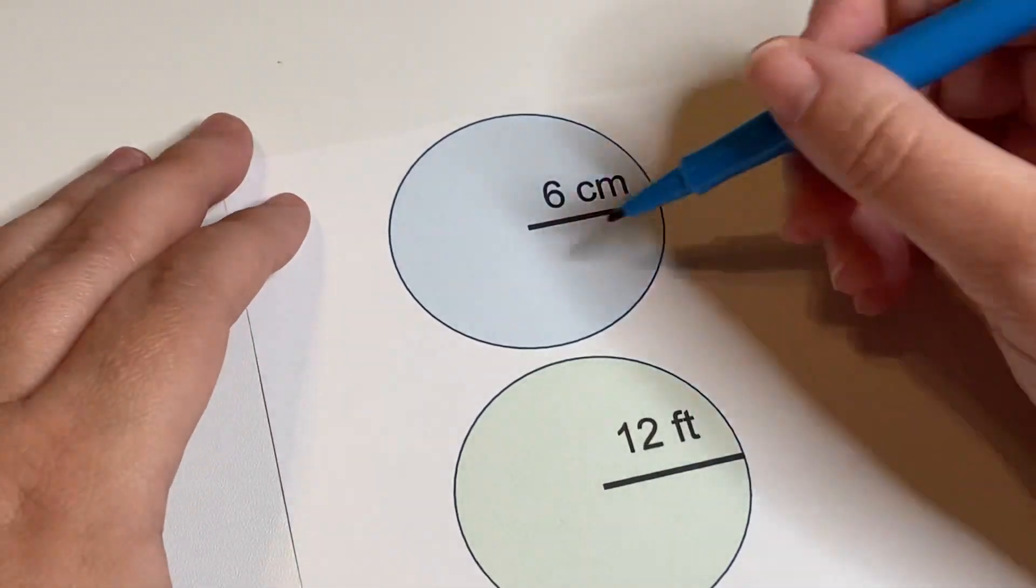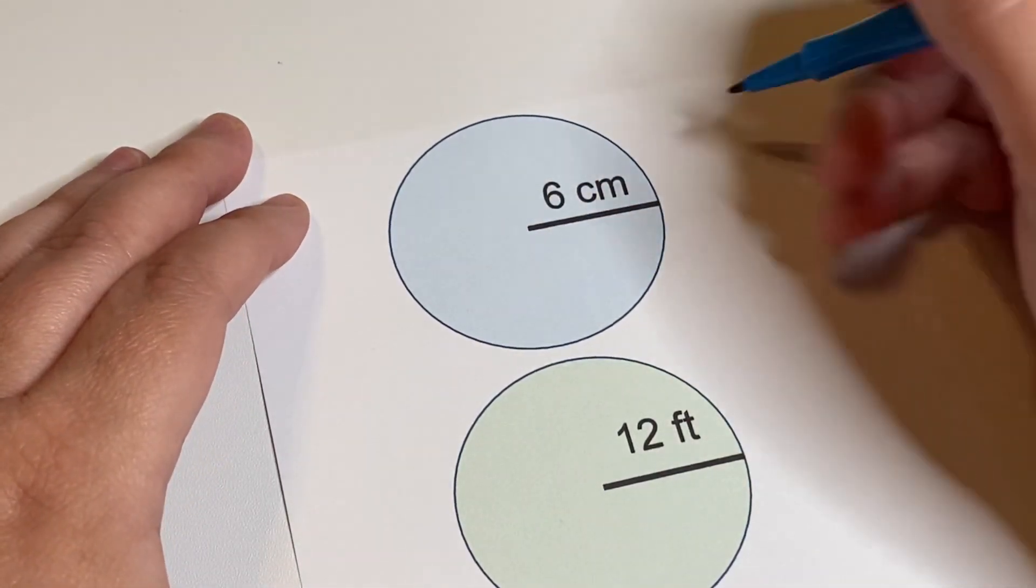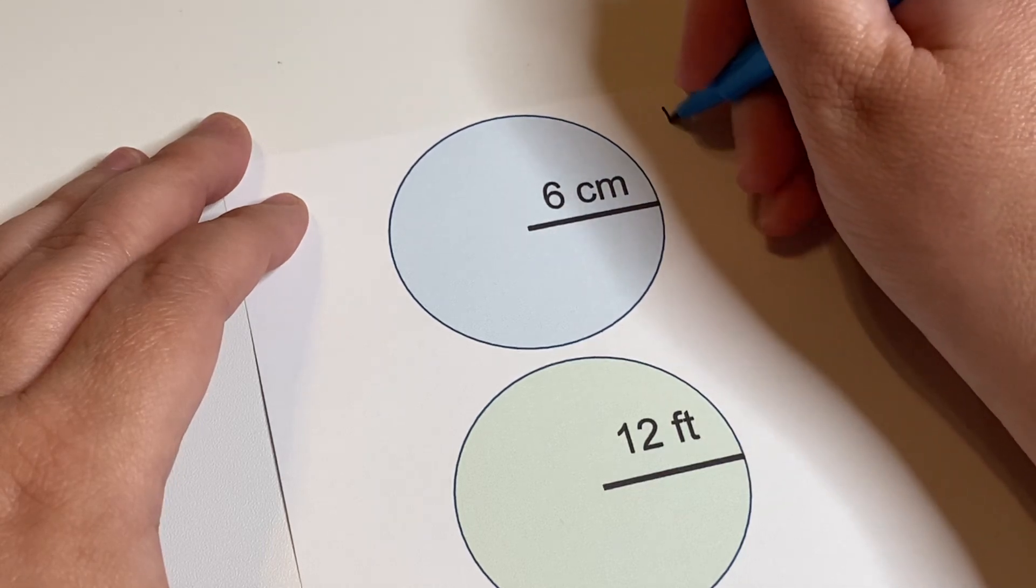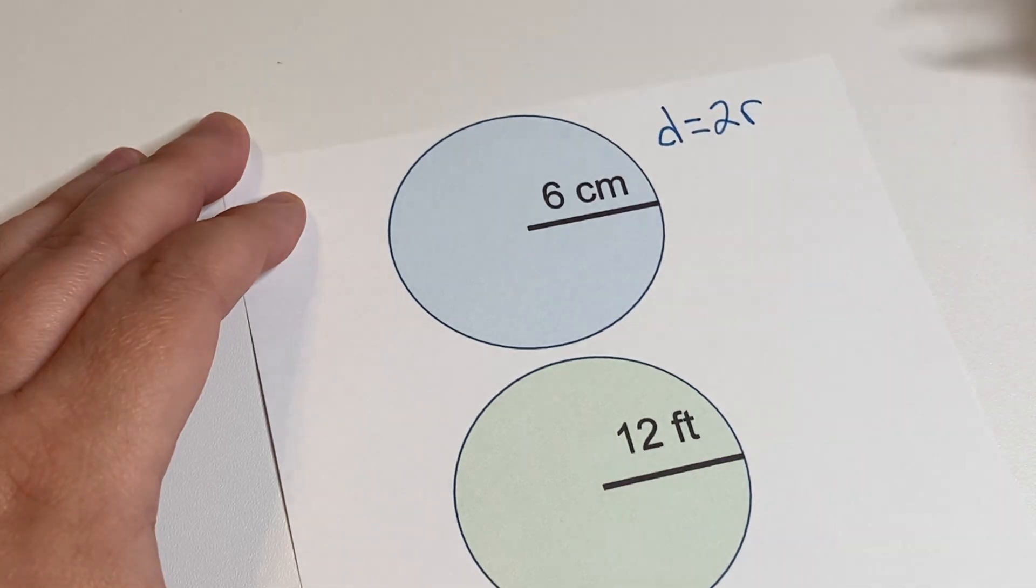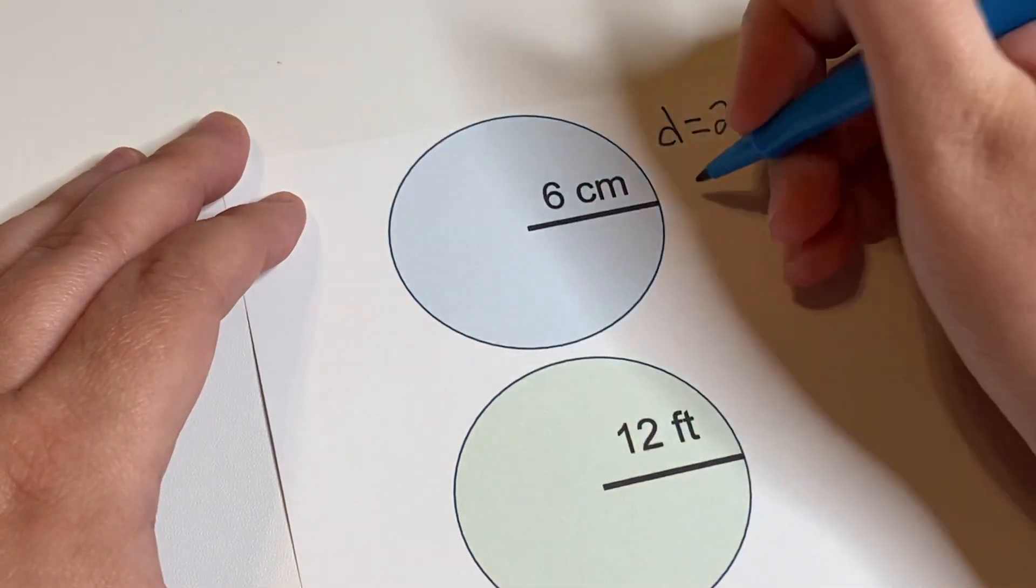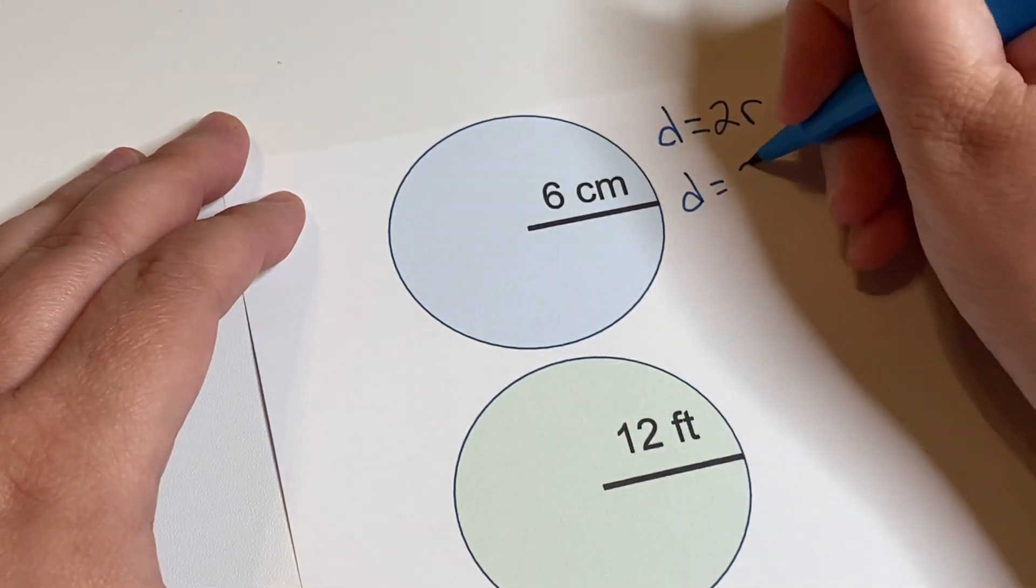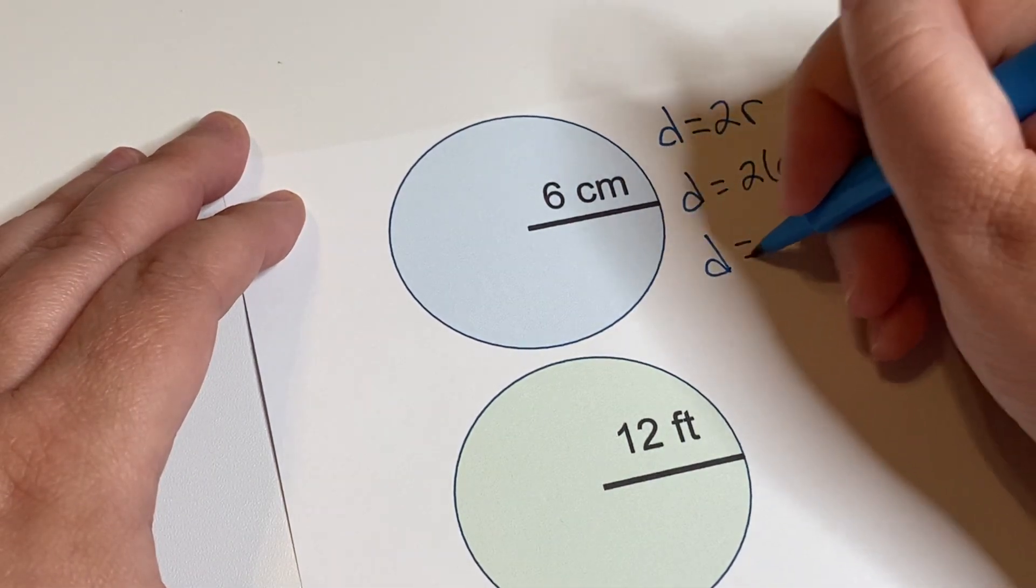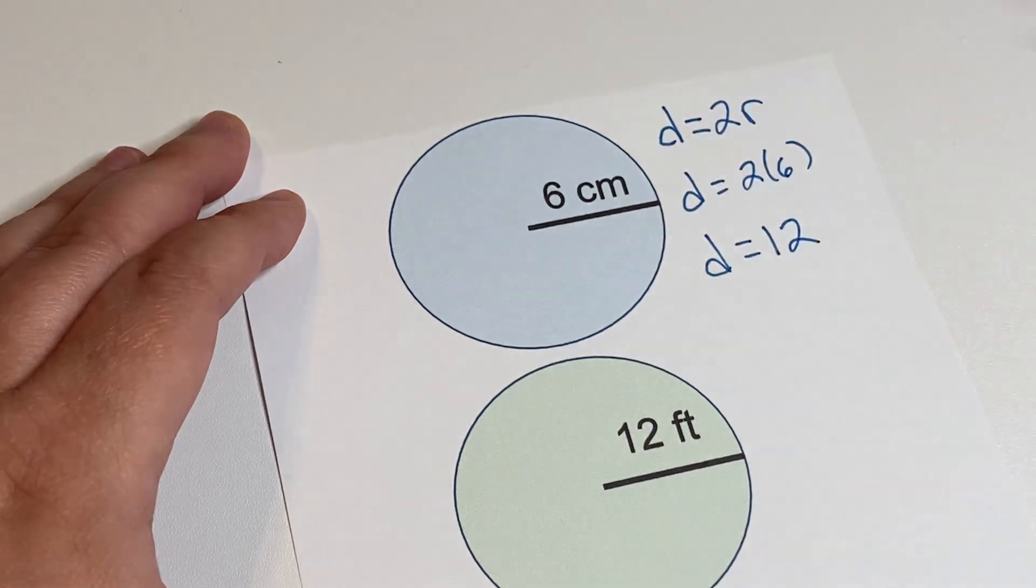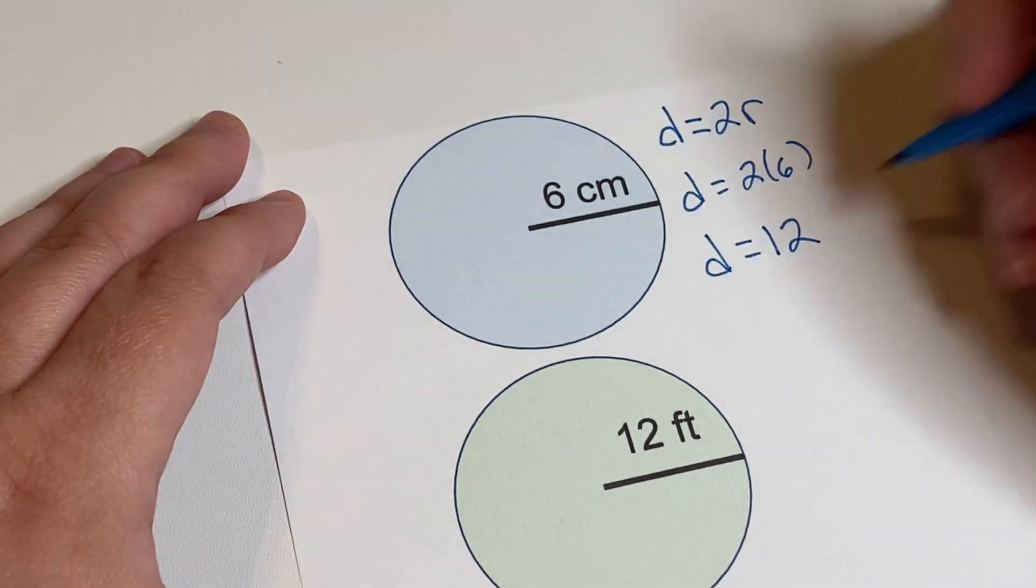So here are two more examples. We have a radius of six. So we remember that if we're trying to find the diameter it's two times the radius because we're gonna be going all the way across. So the diameter is equal to two times six. So the diameter here would equal twelve and it's centimeters.